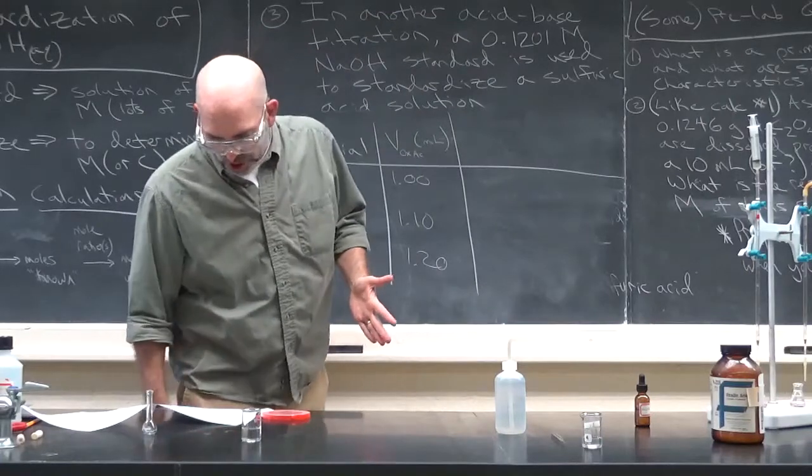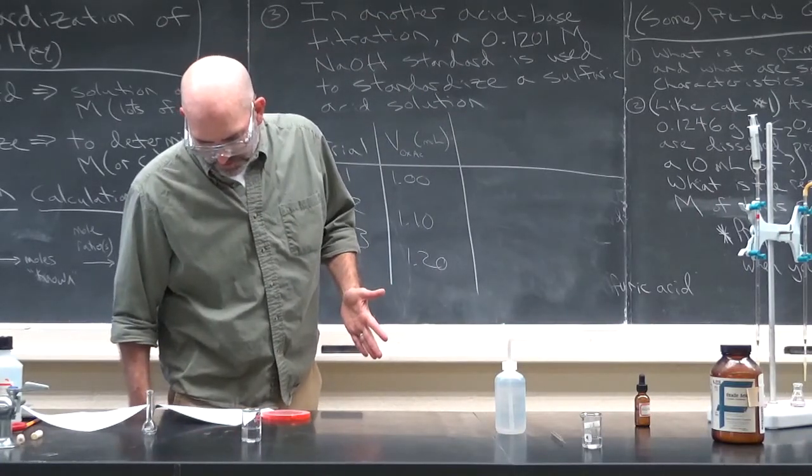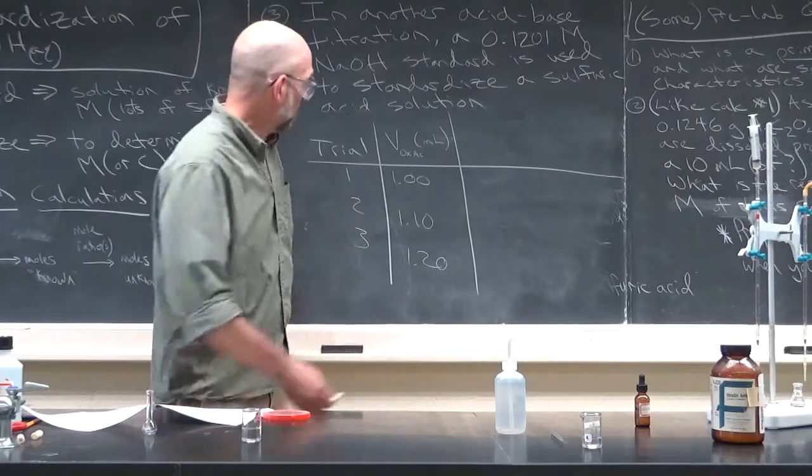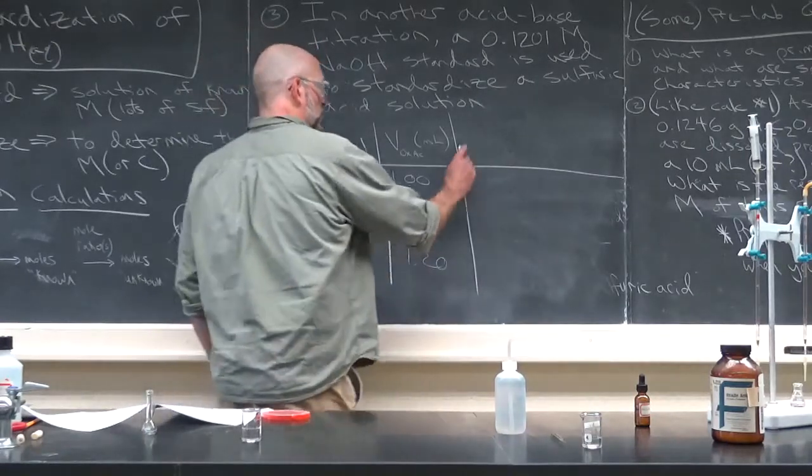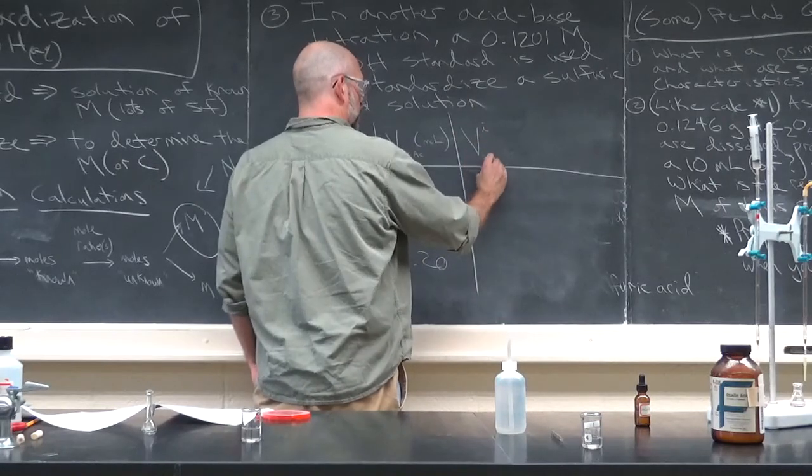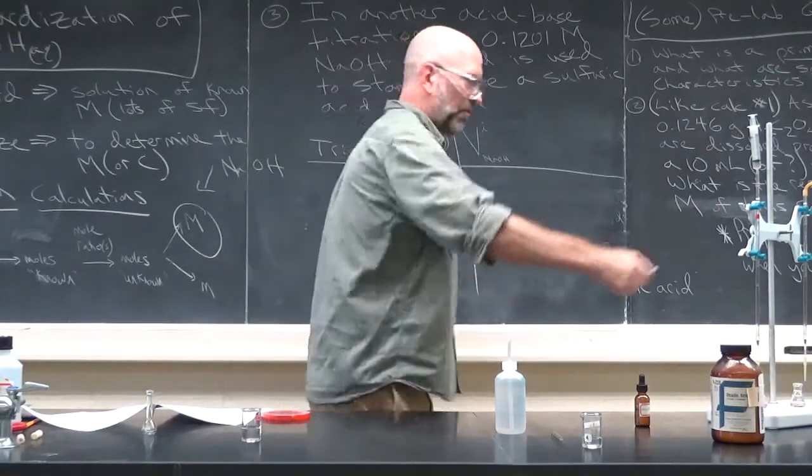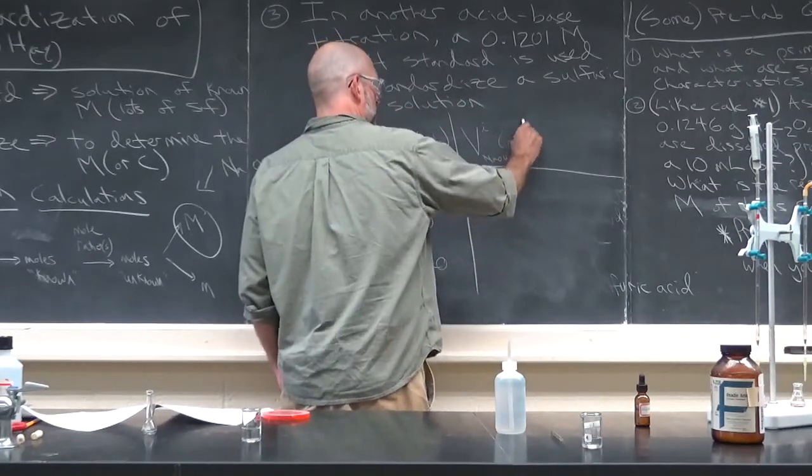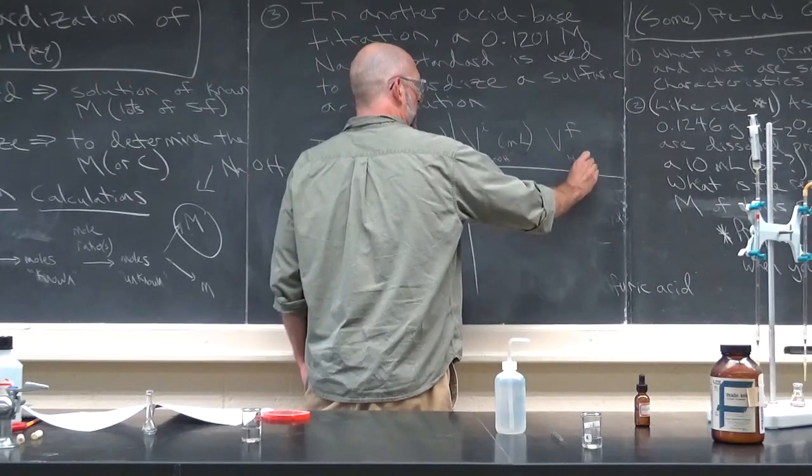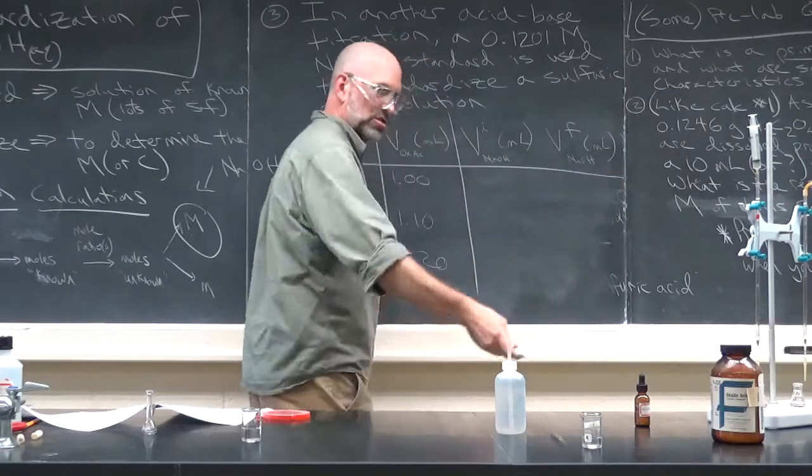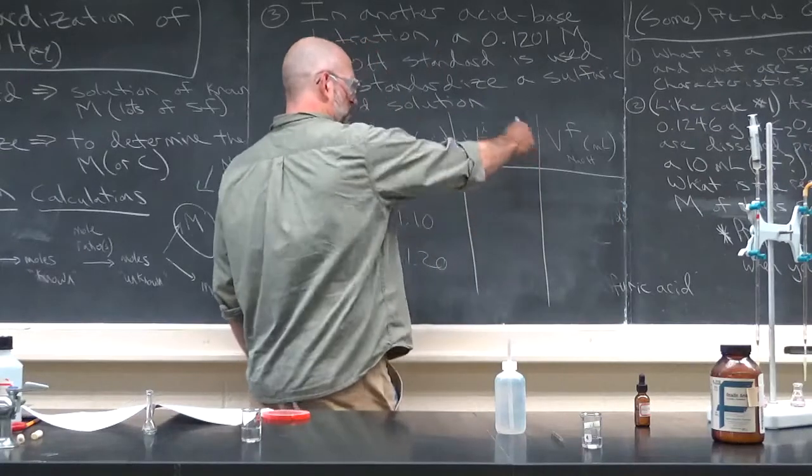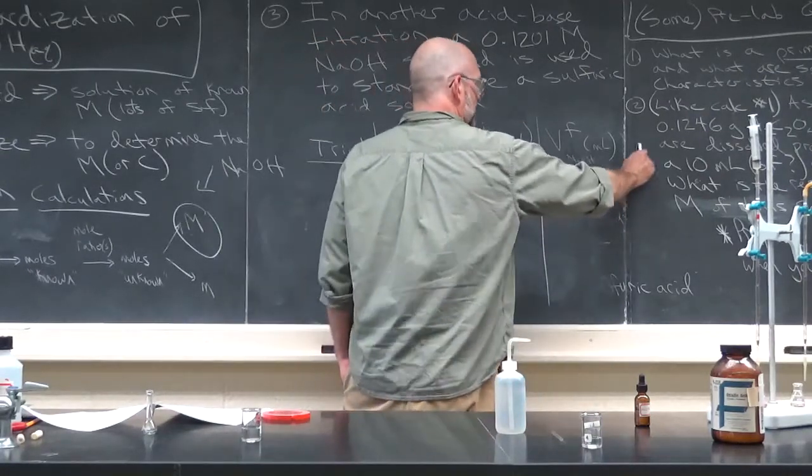Just make sure that these are different so that you're not using a, what's that called? A self-fulfilling prophecy and getting the same measurement each time. Then what you're going to do is, when you titrate, I think this is on here. Love will find out if this isn't exactly right. So you'll want to record the initial volume of the NaOH. So, you know, where it is before you start the titration.